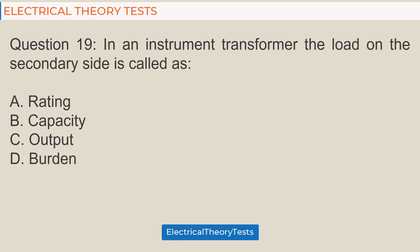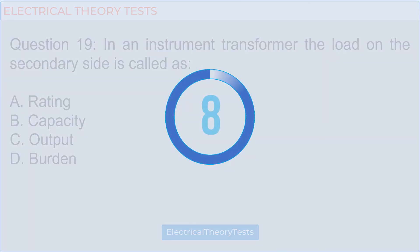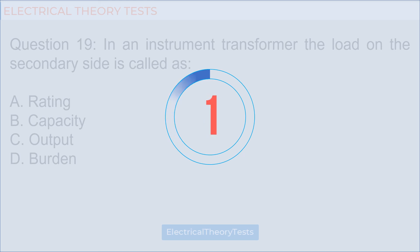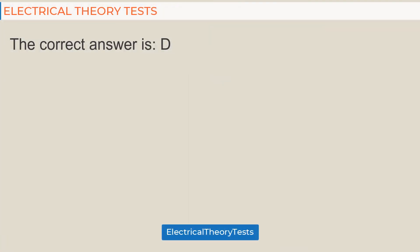Question 19: In an instrument transformer, the load on the secondary side is called — a) rating, b) capacity, c) output, d) burden. The correct answer is d) burden.